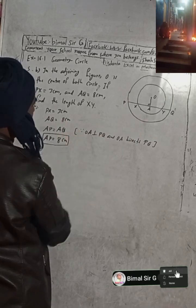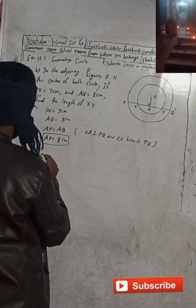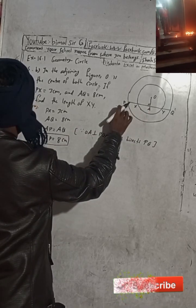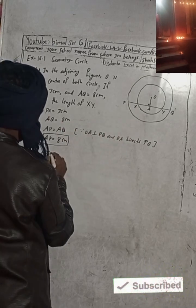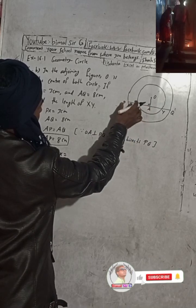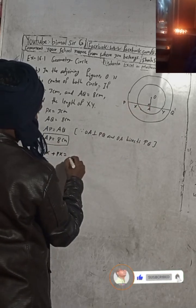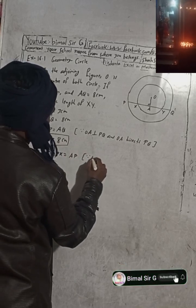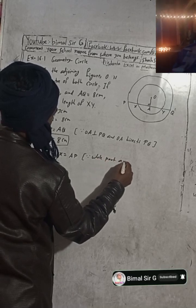AX plus PX is equal to AP. The reason is the whole part axiom — if you add part AX and part PX, you get the whole line AP.